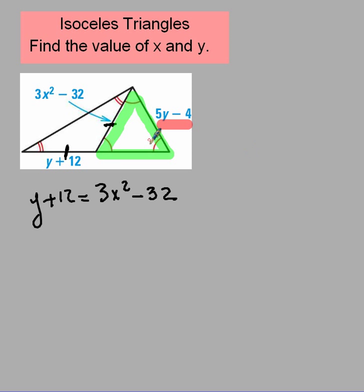But wait a second. This side that's shared right here between the two triangles, that side's got to be congruent to itself because they share it. So it's going to have the same length. So that means that 5y minus 4 is really also the same thing as this 3x squared minus 32, which is also the same thing as the y plus 12.